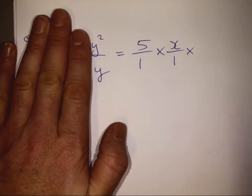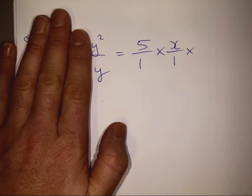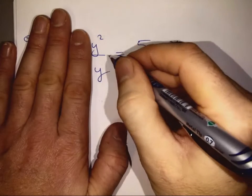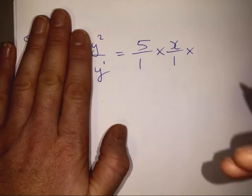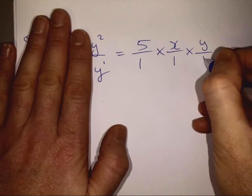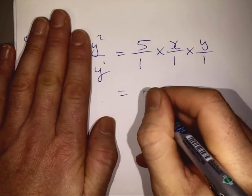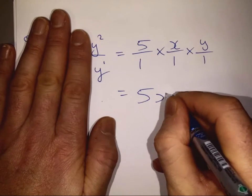Multiplied by looking at the y's. Same procedure. We subtract the powers. 2 minus y to the power of 1 there. You could write that in as a 1 if you like. So you'll end up with y to the power of 1 on top, which is just y over 1. So our final answer, tidied up there, is 5xy.